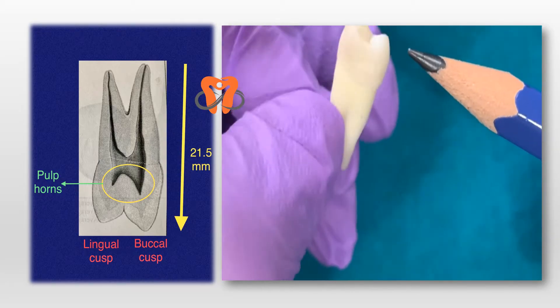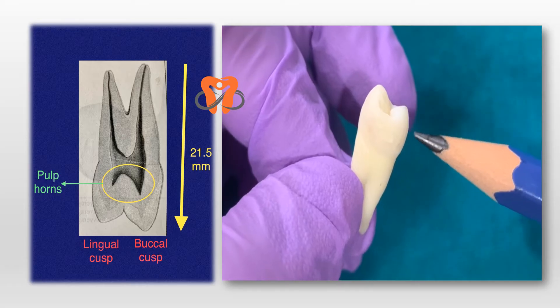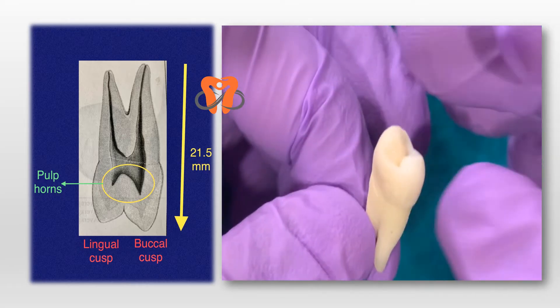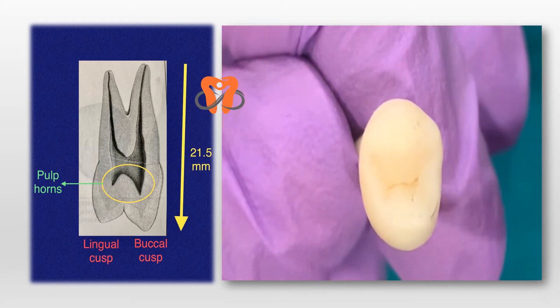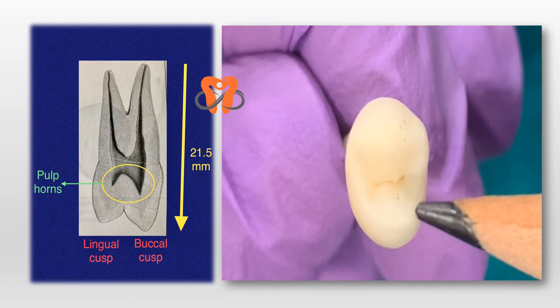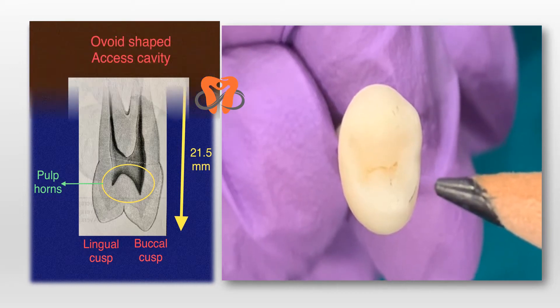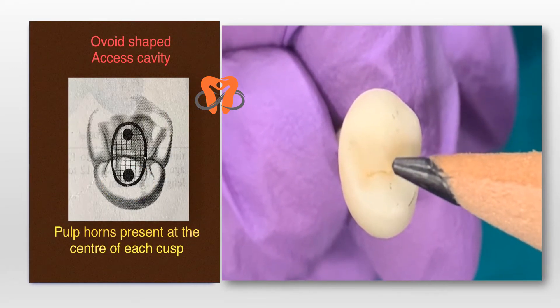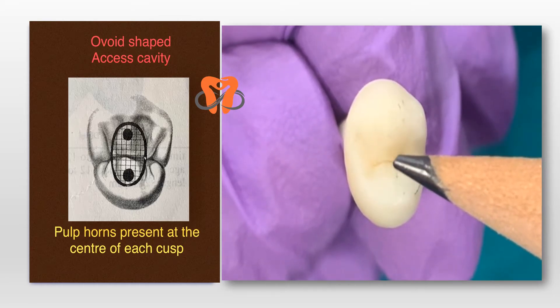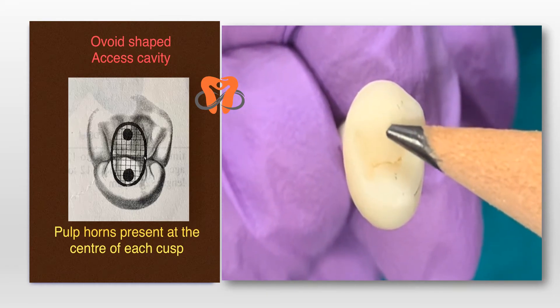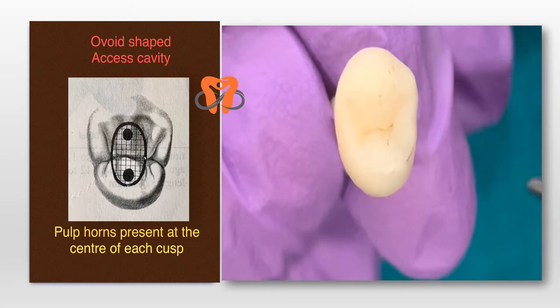This tooth is a transitional tooth between the maxillary incisors and the molars. The pulp chamber in this case is ovoid in shape, and there are two pulp horns, one under the buccal cusp and another under the lingual cusp.